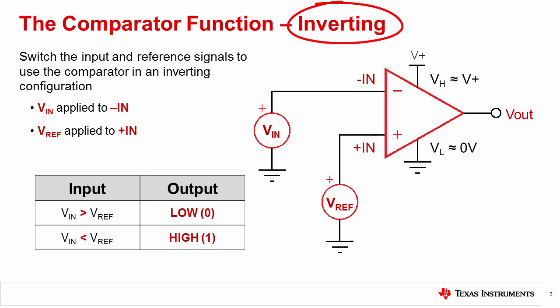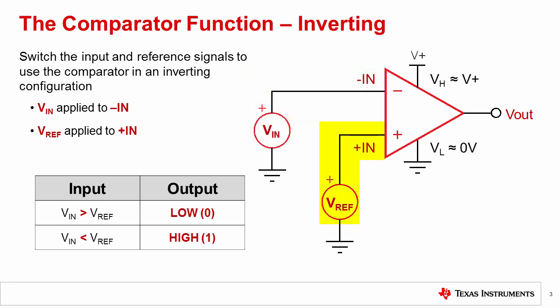A comparator can also be used in an inverting configuration. In this condition, VIN, the input signal, is connected to the inverting input, -IN, and VREF, the reference signal, is connected to the non-inverting input, +IN. Because of the change in how we've defined our input signals, the output behavior can be considered inverted. Now, if VIN is greater than VREF, the comparator output goes low, and if VIN is less than VREF, the output goes high.